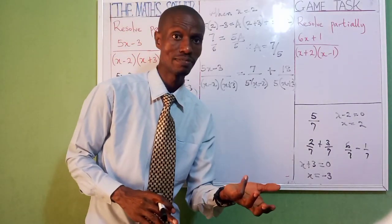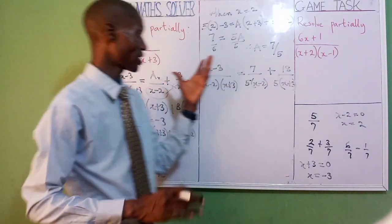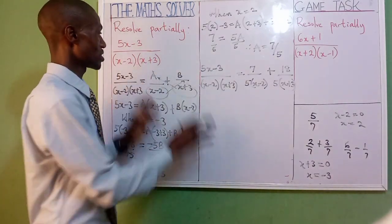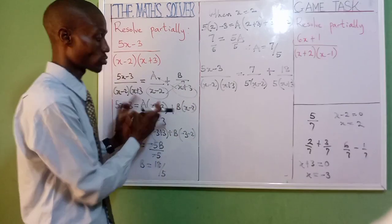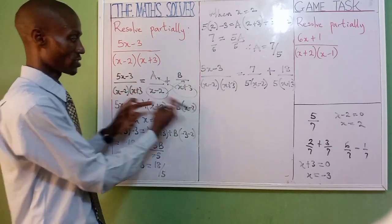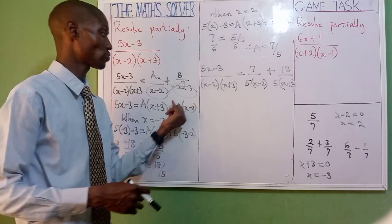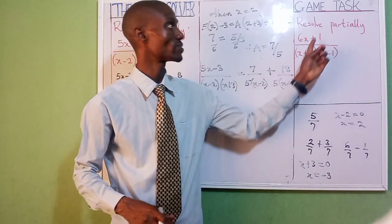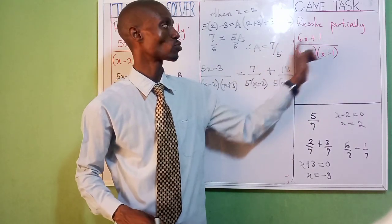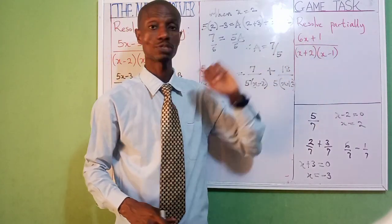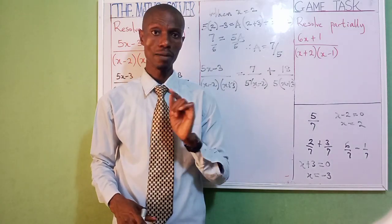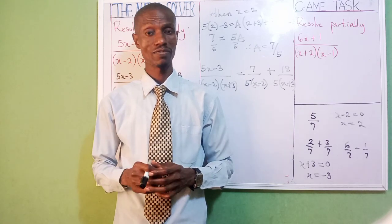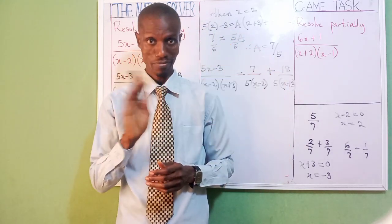Like I told you, you can use elimination or cover-up method — and these are the elimination methods. It's as simple as that: separate the denominator, assign a and b, cross multiply, equate each bracket to 0, and substitute. Please try and attempt this: 6x plus 1 divided by x plus 2, x minus 3. Try and attempt it, and please submit your answer in the comment section. Thank you very much for watching. Take care of yourself, and please don't forget to subscribe to the channel. Bye.